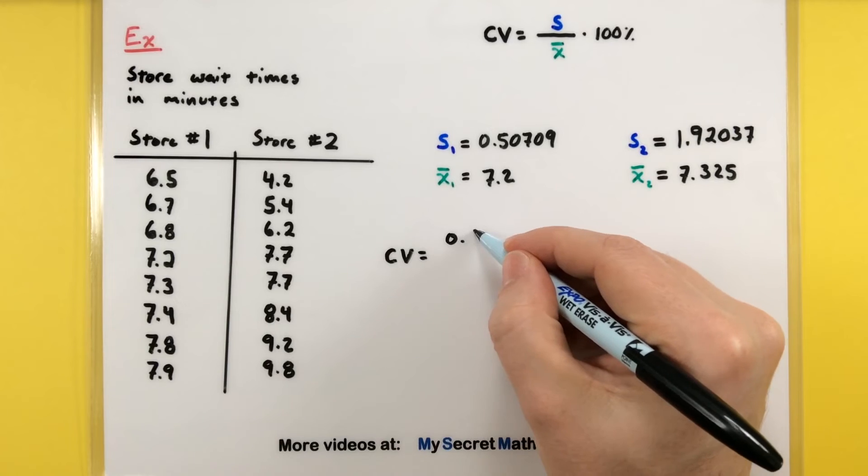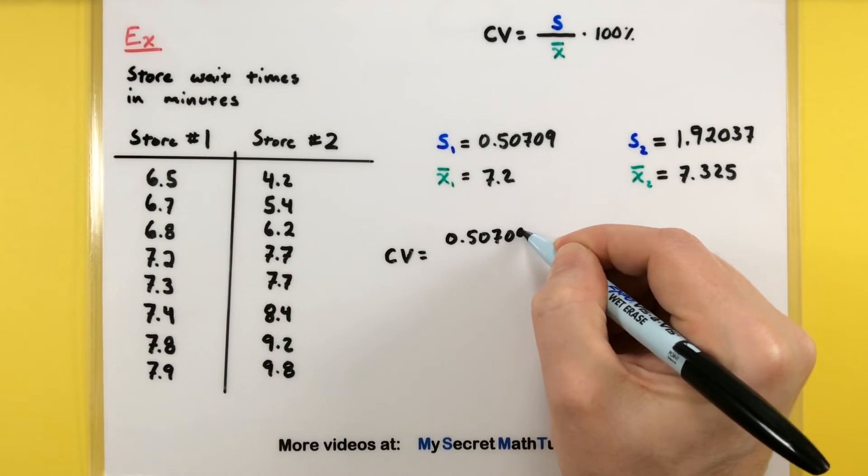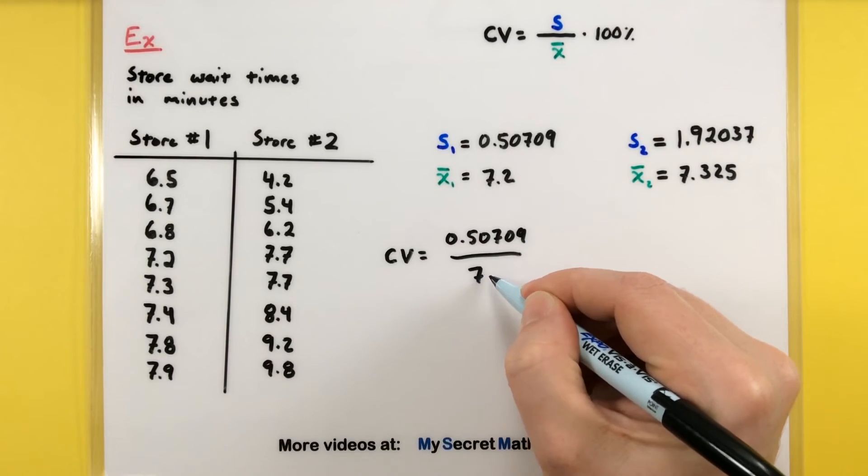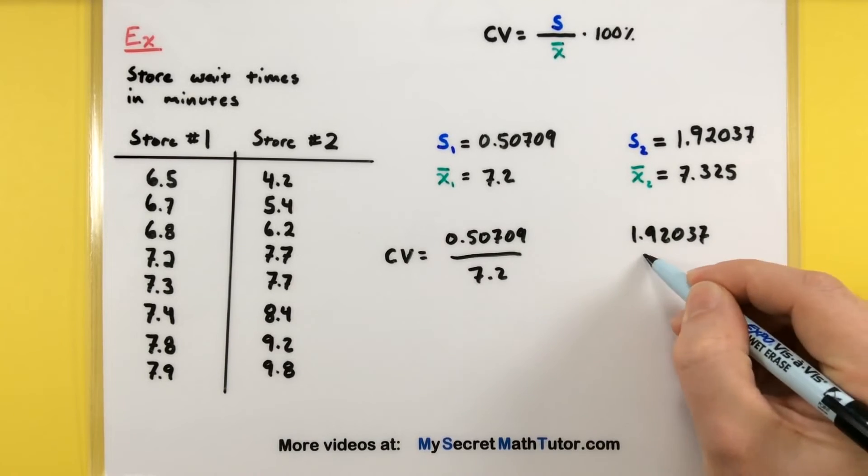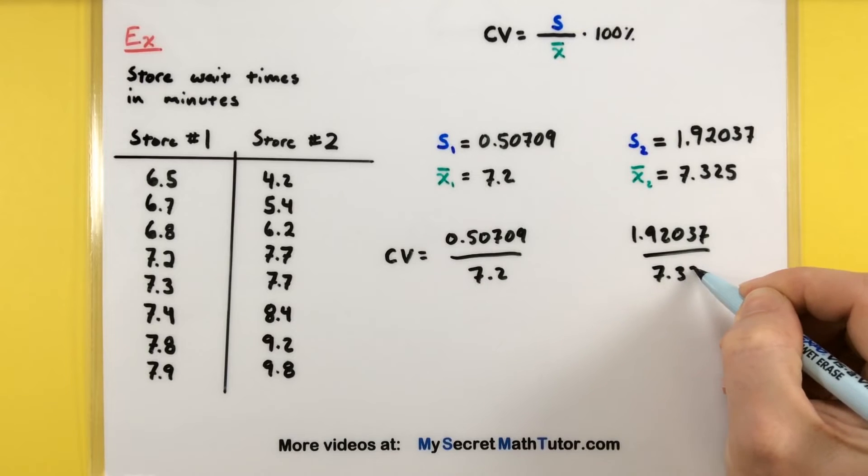Alright, so let's see, we got 0.50709. This will divide it by 7.2. And then for our other one, 1.92037. This will be divided by 7.325.